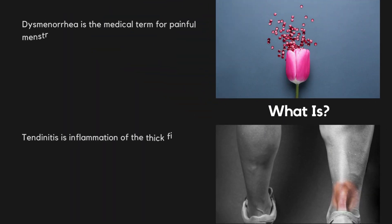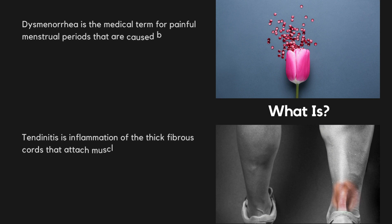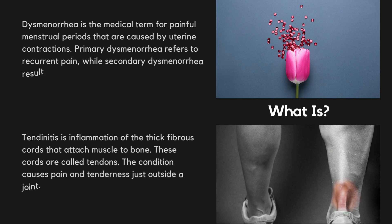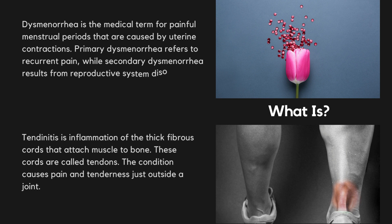Dysmenorrhea is the medical term for painful menstrual periods that are caused by uterine contractions. Primary dysmenorrhea refers to recurrent pain, while secondary dysmenorrhea results from reproductive system disorders. Both can be treated. Tendinitis is inflammation of the thick fibrous cords that attach muscle to bone. These cords are called tendons. The condition causes pain and tenderness just outside a joint.